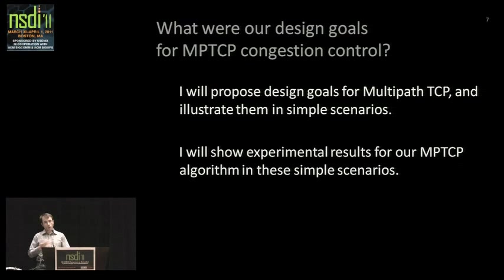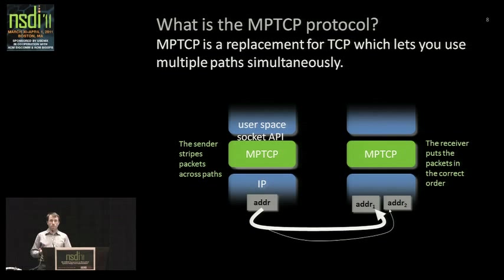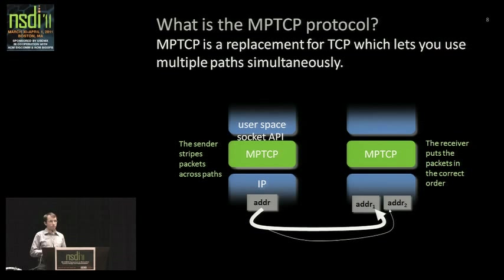Before the design goals, I want to briefly describe what the actual MPTCP protocol looks like. We have MPTCP running at the sender and at the receiver — it's just a replacement for TCP. We imagine that either the sender or the receiver has multiple addresses. When the sender has packets to send, it stripes them across the different connections it has. The receiver reorders the packets into the correct order. Whether it's MPTCP, multipath compound TCP, or multipath congestion control for SCTP — I'm going to talk about congestion control in the abstract.